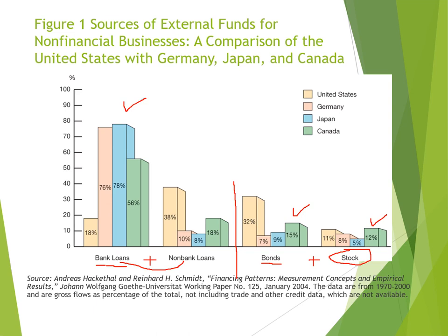This is the end of the first lecture. Today we studied some basic facts about the financial system, what stocks and bonds are, how they differ from each other, and what options businesses have for external funding and how much preference is given to each mode. You can read further from Mishkin's book, Chapter 8. If you have any queries, let me know.